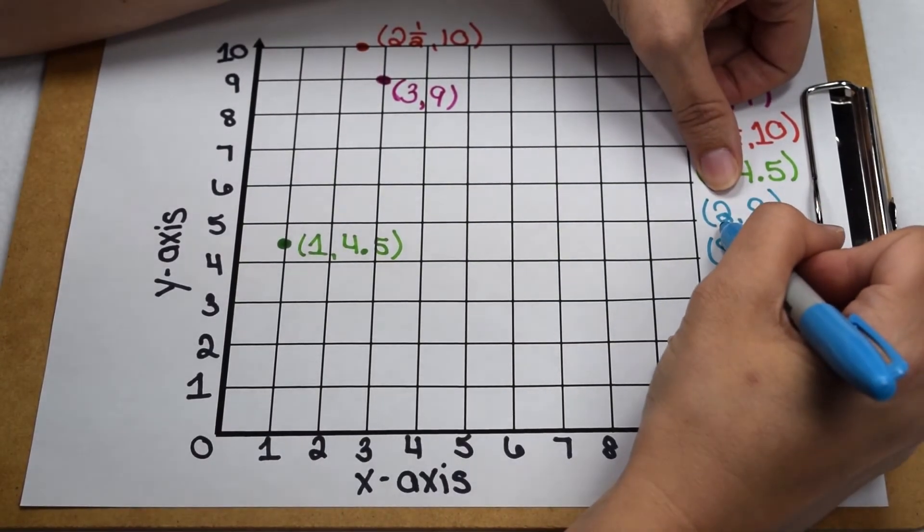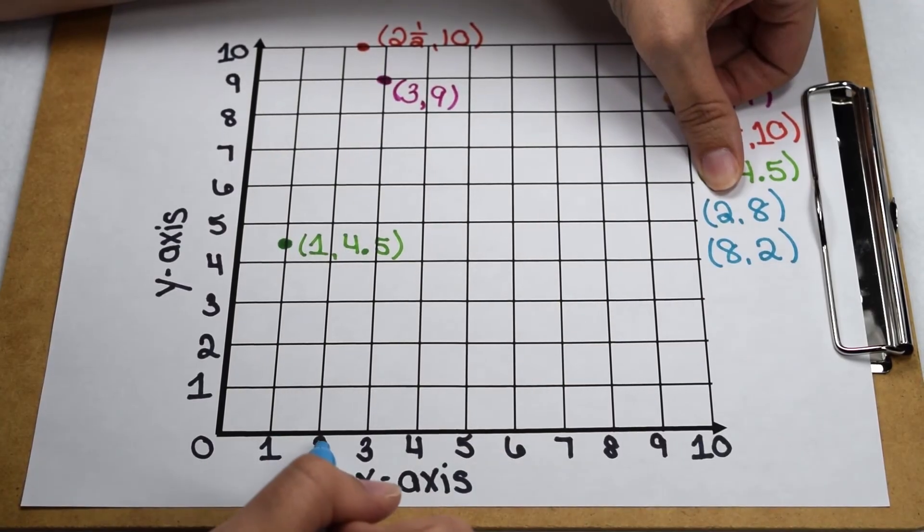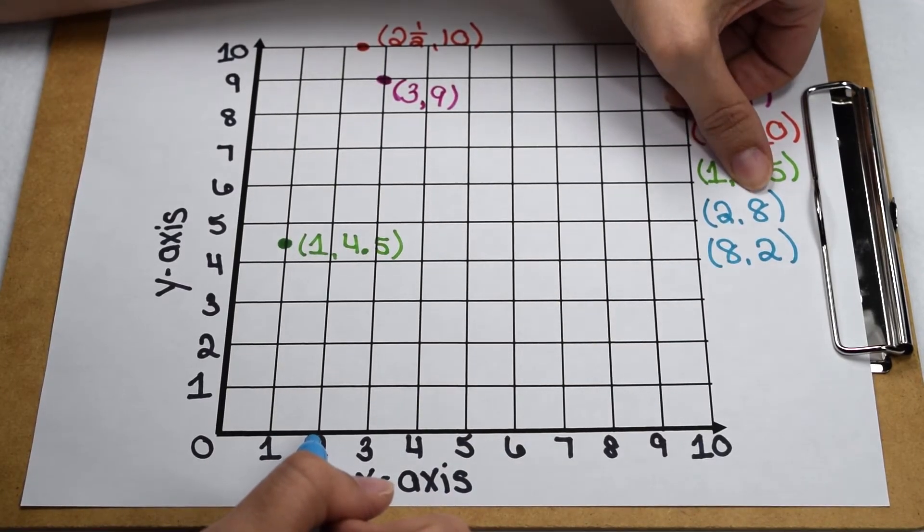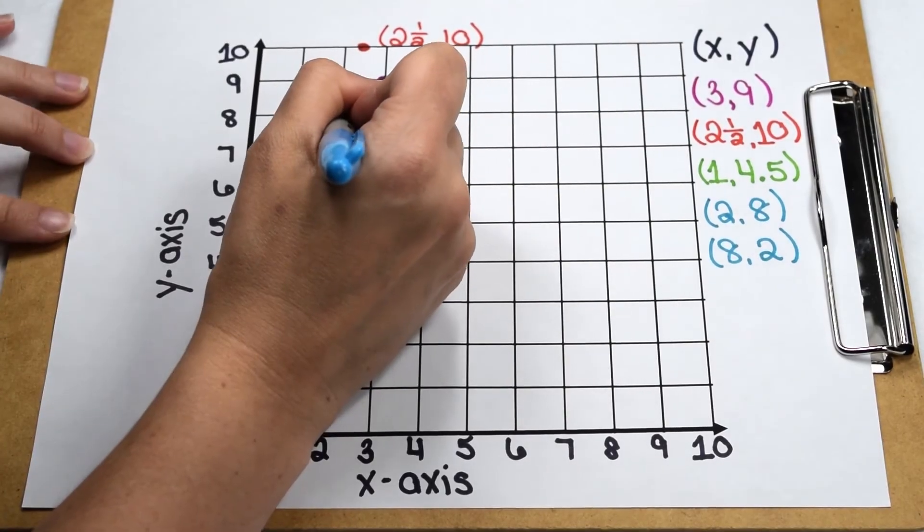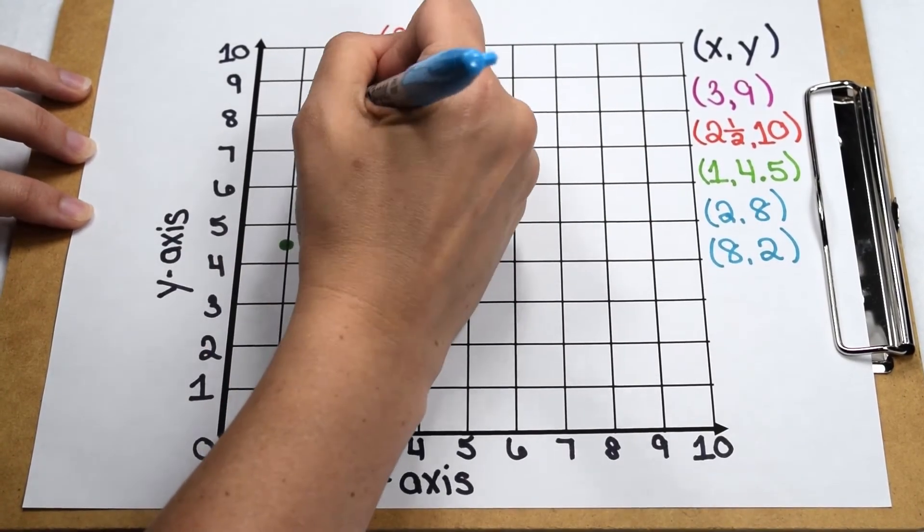When I go to plot the point two, eight, I'm going to go across two places on my x-axis, and then up eight places on my y-axis. This is where I can then plot the point two, eight.